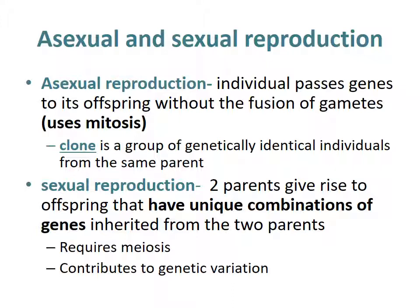Reproduction can be either asexual or sexual. Asexual reproduction is when an individual passes genes to its offspring without the fusion of gametes, so they use mitosis. This produces a clone, which is a group of genetically identical individuals from the same parent. With sexual reproduction, two parents give rise to offspring that have unique combinations of genes inherited from those parents. This requires meiosis and contributes to genetic variation.